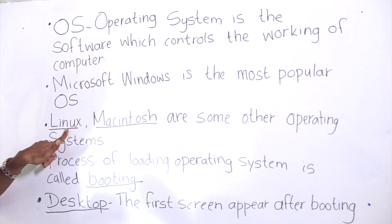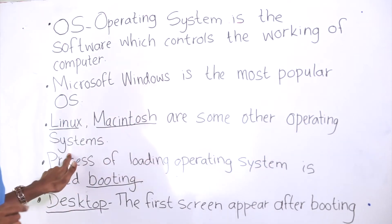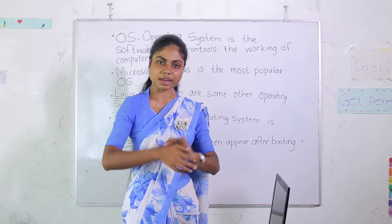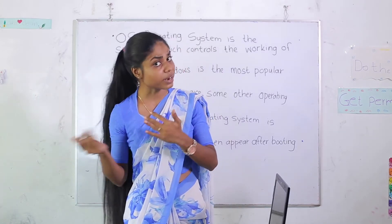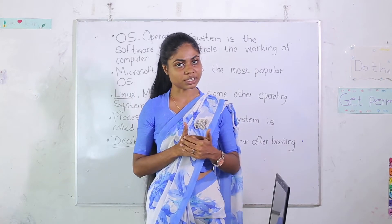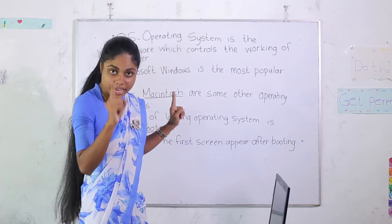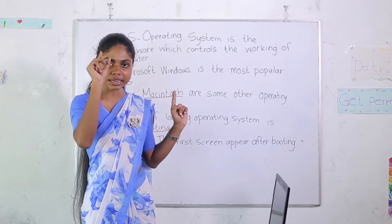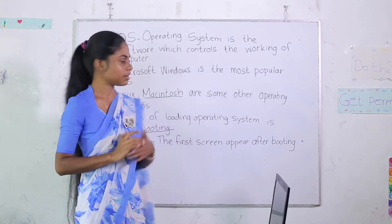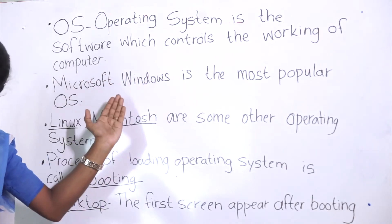There are other operating systems like Linux and Macintosh. These are also names of operating systems, just like Microsoft Windows. They all help us to work with the computer.